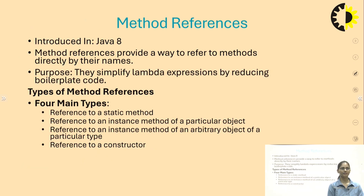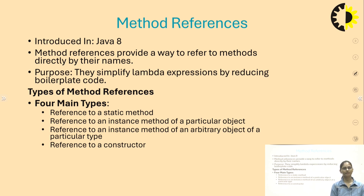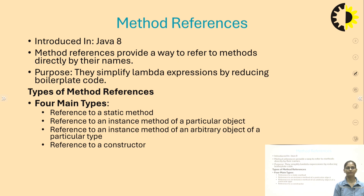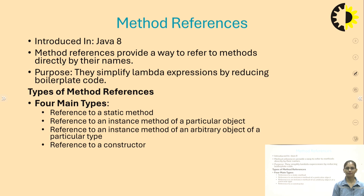Method references are introduced in Java 8 and provide a way to refer to methods directly by their name. They simplify lambda expressions by reducing boilerplate code. The four main types are: reference to a static method, reference to an instance method of a particular object, reference to an instance method of an arbitrary object, and reference to a constructor.